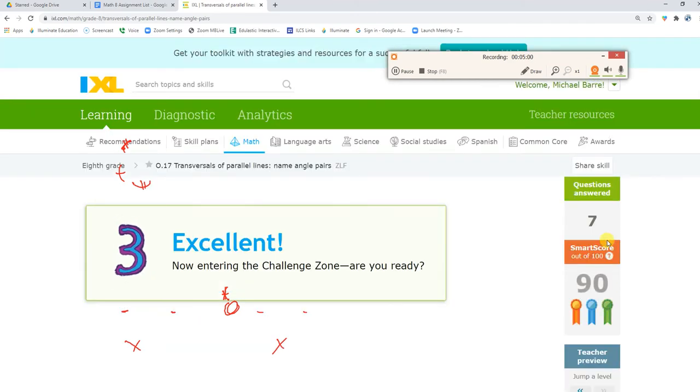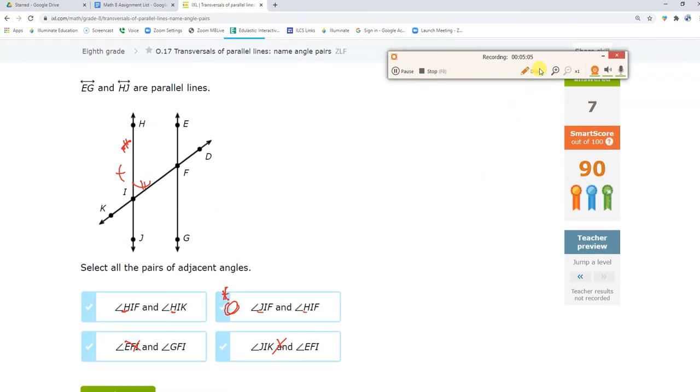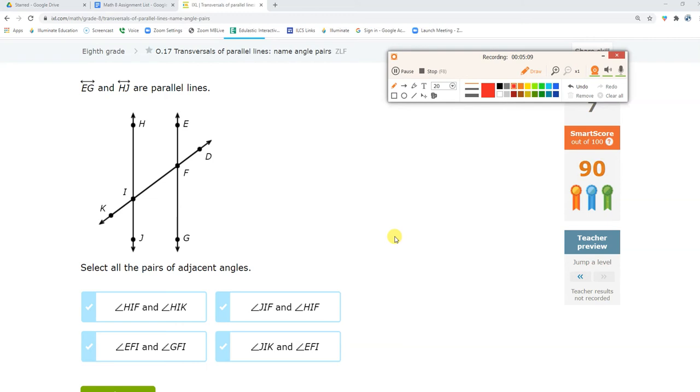Entering the challenge zone. What makes this more challenging? Select all. You got it. Select all the pairs of adjacents. So one thing on adjacents is the center letter is going to be the same on all of them. So those could be adjacents. This one can't be adjacent because the center letter. But HIF would go with HIK. Those are adjacents. EFI with GFI. Yep. Those are adjacents. We know this one doesn't work. JIF with HIF. Yep. Those are adjacents also. So three of them are adjacents.